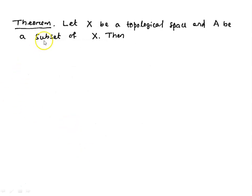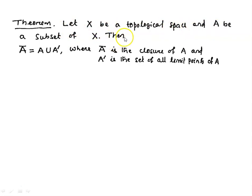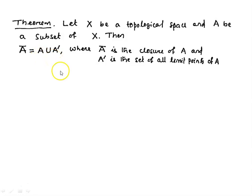Now we have a theorem. Let X be a topological space and A be a subset of X. Then Ā = A ∪ A′, where A′ is the set of all limit points of A. That means the closure of A is the union of A and the set of all its limit points.